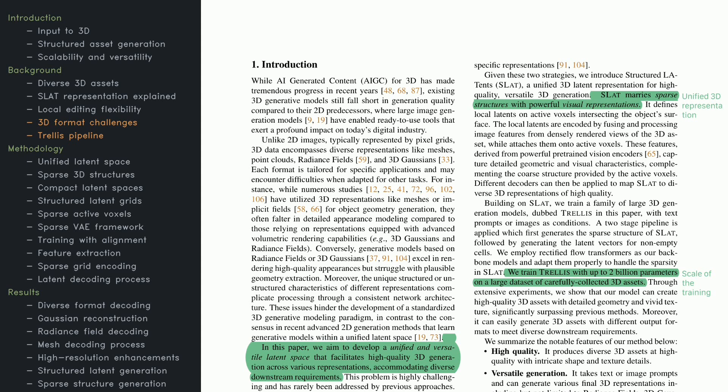The method, called trellis, first constructs a coarse, sparse structure, then uses transformers to add in the details. By training on a large dataset of 3D assets, trellis provides high-quality outputs and supports multiple 3D formats. Think of it like a universal toolkit for generating 3D objects in different styles, without having to switch approaches every time.